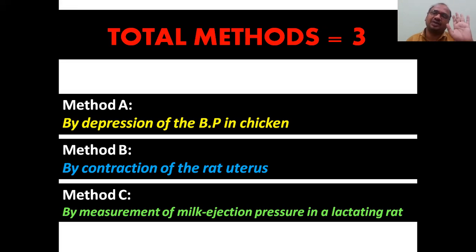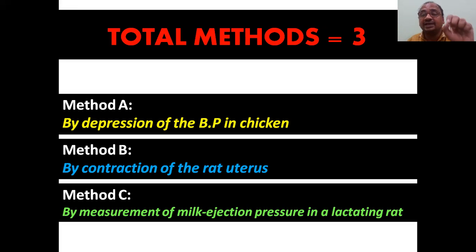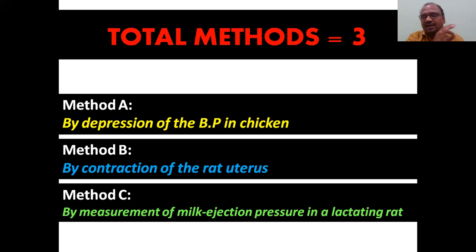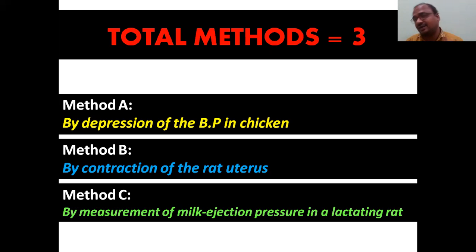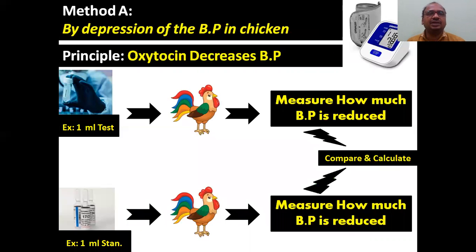Method A is by the depression of blood pressure (BP) in the chicken. For that we take a male cockerel — a young male chicken — because oxytocin decreases the BP. Method B is by contraction of the rat uterus, using a female rat, since oxytocin contracts the uterus. Method C is by measurement of milk ejection pressure from the rat nipple, also using a female rat.